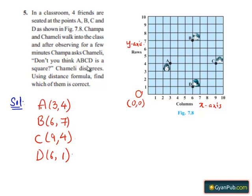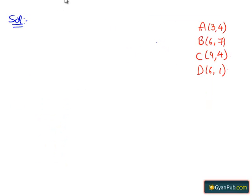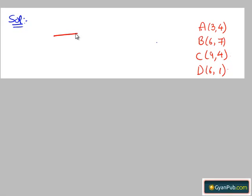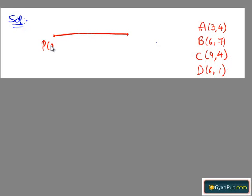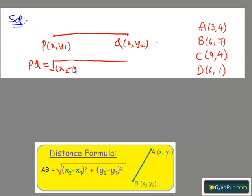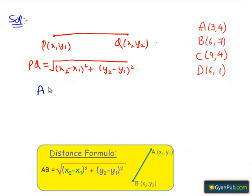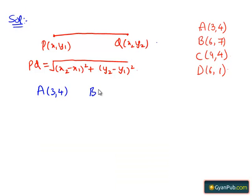In order to check whether ABCD is a square or not, we need to find the distances AB, BC, CD and AD, and also the lengths of the diagonals AC and BD. We know that the distance between two points P and Q is given by PQ = √((x₂ - x₁)² + (y₂ - y₁)²). Now let us take the first two points A(3, 4) and B(6, 7).